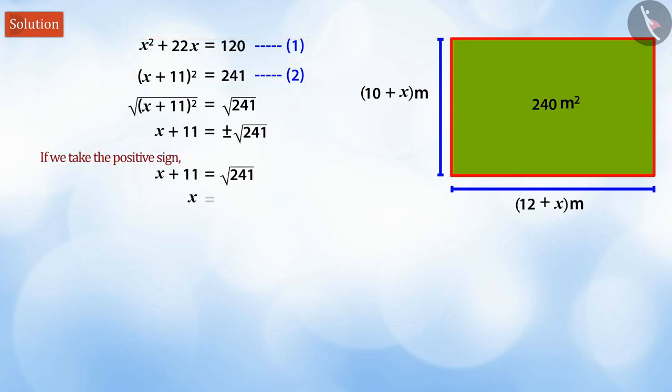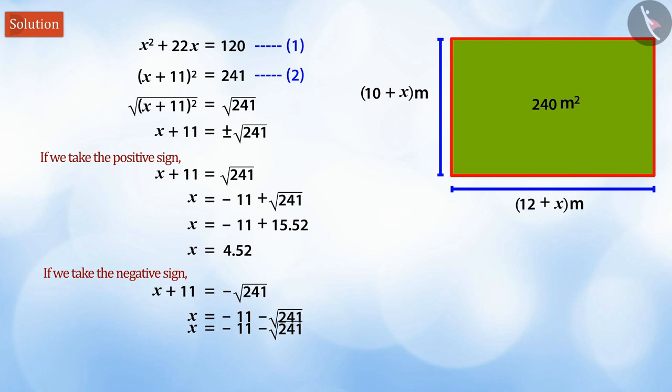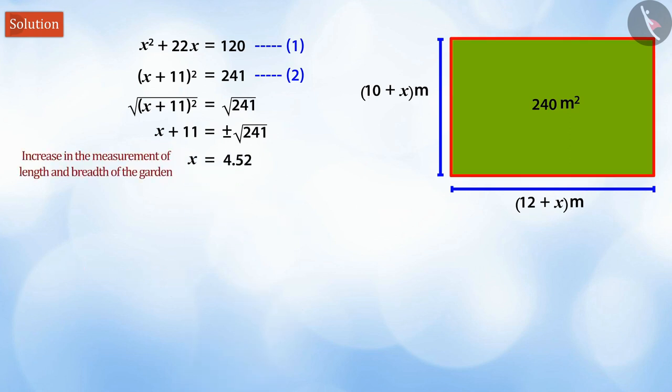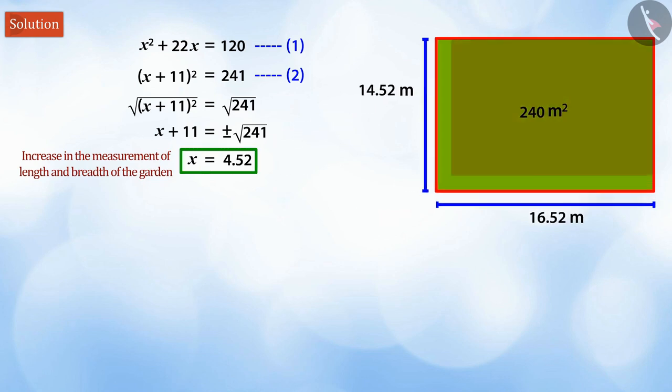Thus, if we take the positive sign, the value of x will be 4.52. And if we take the negative sign, the value of x will be minus 26.52. Here, we get two values of x. However, dimension of the garden cannot be a negative value. Therefore, the increase in the measurement of length and width of the garden will be 4.52 meters.